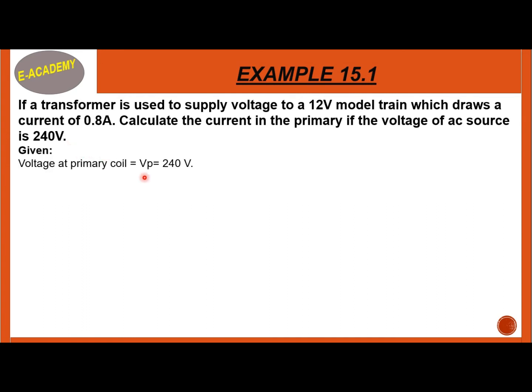Voltage at primary coil VP is equal to 240V. Voltage at secondary coil VS is equal to 12V. Current in the secondary coil IS is 0.8A.